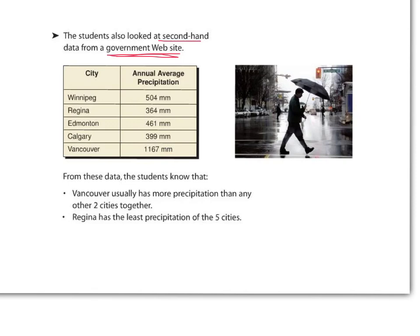From this data, the students know that Vancouver usually has more precipitation than the other cities combined — an awful lot more. Regina has the least precipitation of the five cities. Regardless, this is second-hand data. It has been gathered from a government website.